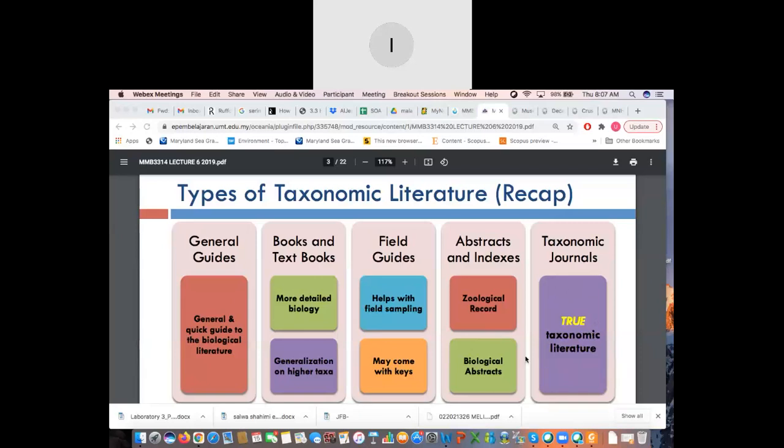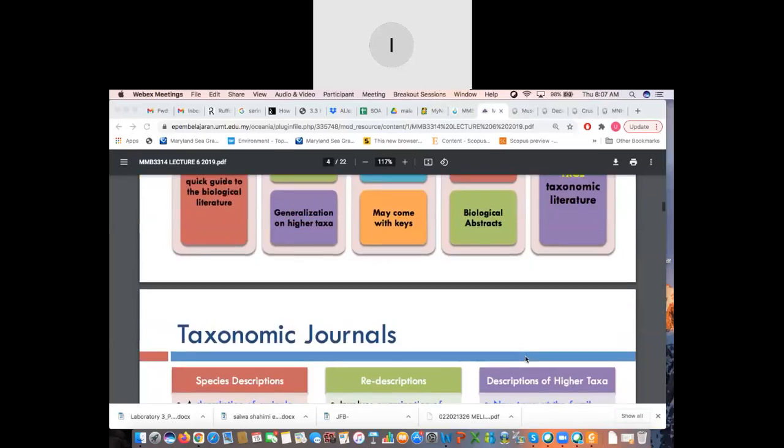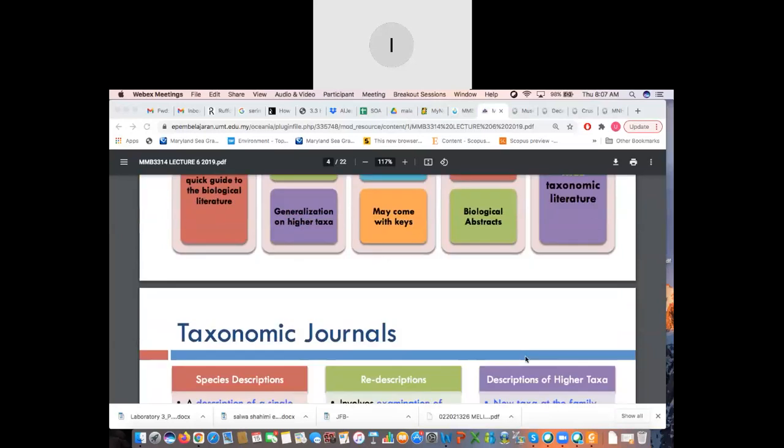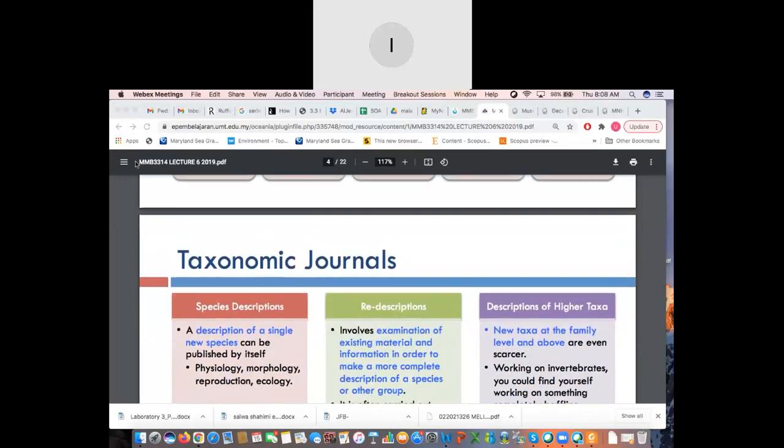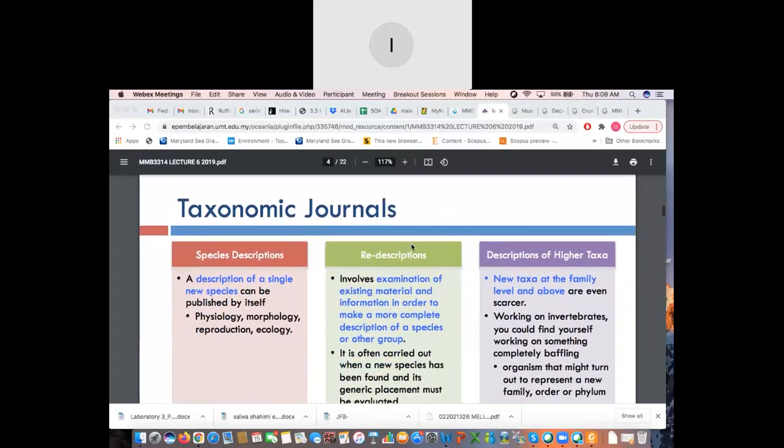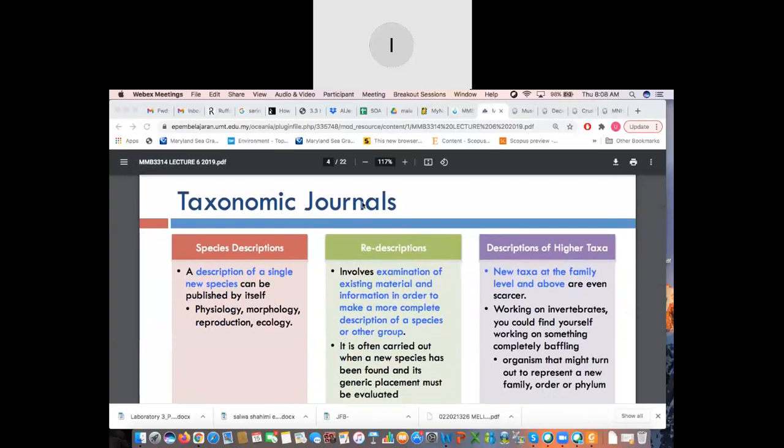So, one of the journals that you're looking at is Zootaxa, but there's actually a lot more available journals out there like ZooKeys, Biotaxa, et cetera. And, so if you're looking at taxonomic journals, so you have different kinds of taxonomic journals.